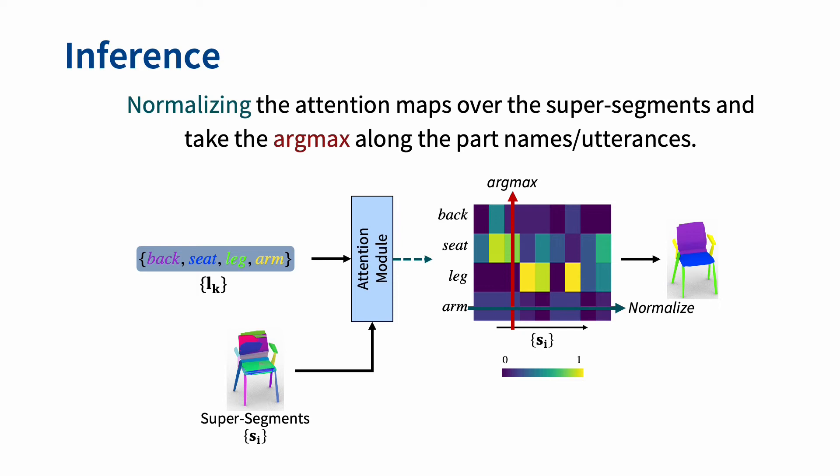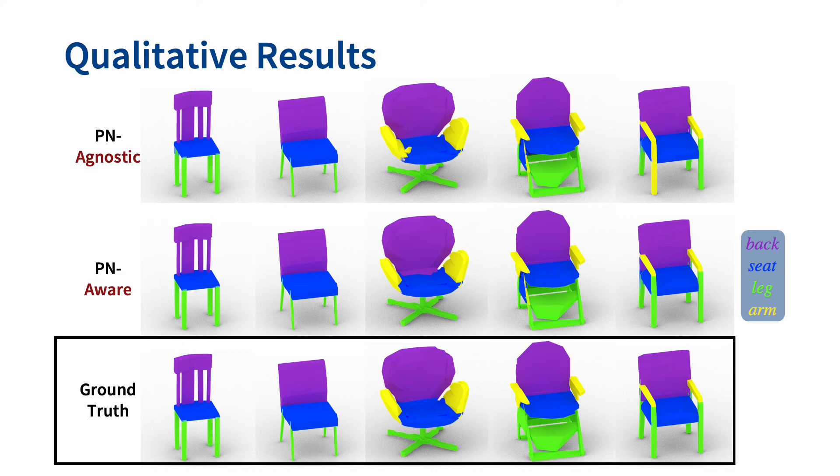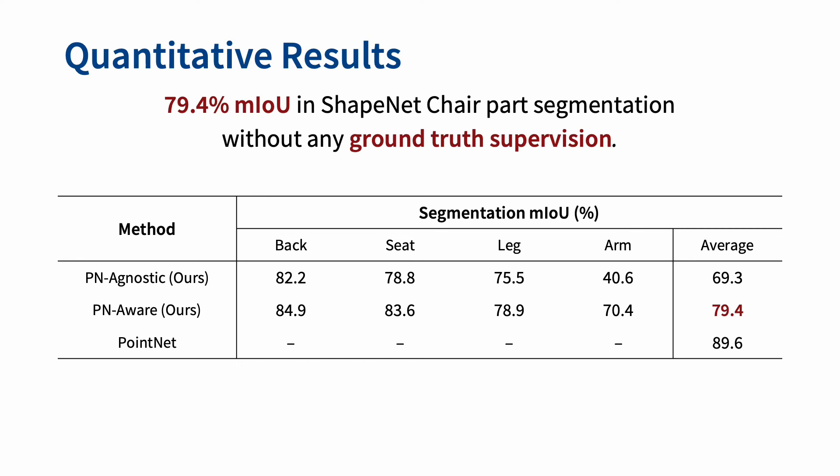Here are some of our qualitative results. Compared to ground truth, both the part name agnostic and part name aware learning cases discover the semantic parts correctly. When the part names are given as additional supervision, PartGlot further improves the segmentation results, especially in challenging cases such as distinguishing between similar-looking arms and legs.